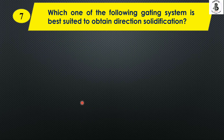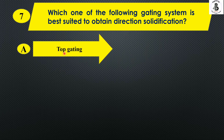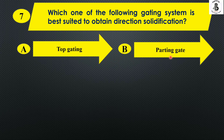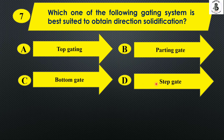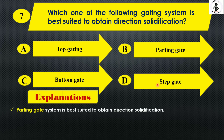Which gating system is best suited to obtain directional solidification? Option A top gating system, Option B parting gate system, Option C bottom gate, and Option D step gate. If you want to control the directional solidification process, you should prefer the parting gate system. The right answer is Option B.